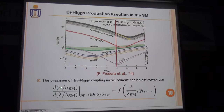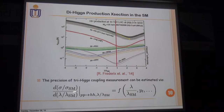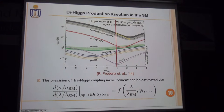Here, F can be understood as the slope of the curve for the di-Higgs production cross-section. From this relation, we can see that for the same di-Higgs production process, if the slope is large in magnitude, then the precision of the tri-Higgs coupling measurement will be relatively high. This is not hard to understand, because this means that the di-Higgs production is more sensitive to the value of the tri-Higgs coupling.